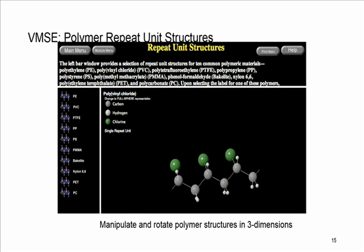The repeat unit structure can also be found and can also be explored using VMSE provided by Wiley. As you can see here an example showing polyvinyl chloride or PVC. This is the single repeat unit and then you can make a chain out of it. And this is very interactive as you can manipulate and rotate the whole polymer structure.